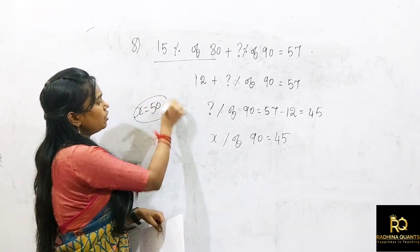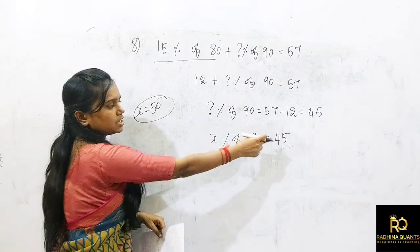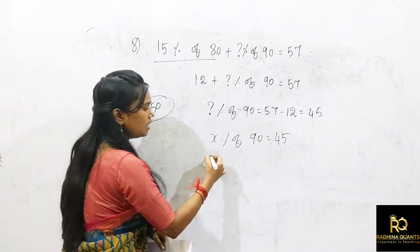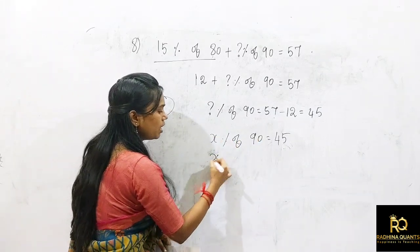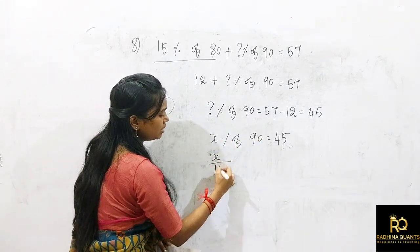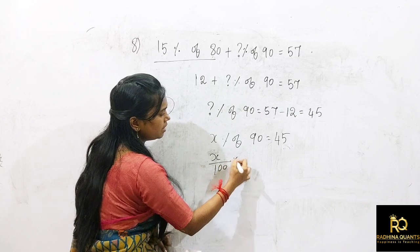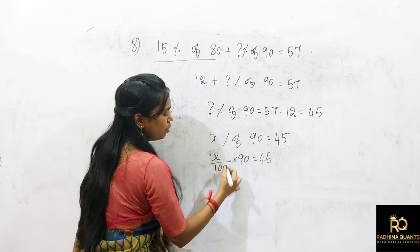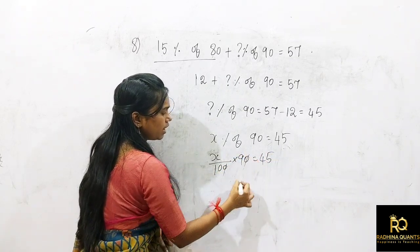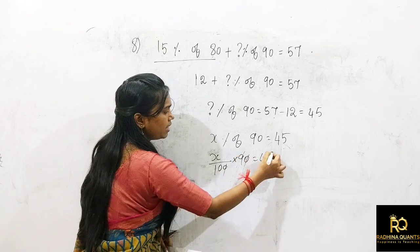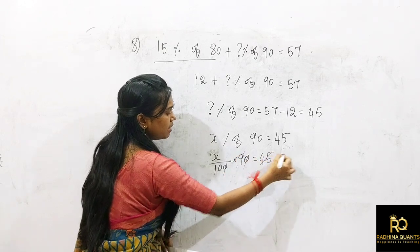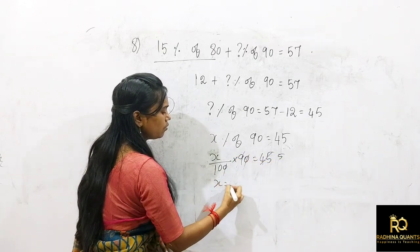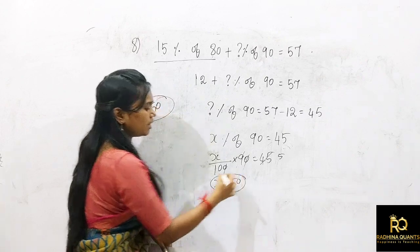We can calculate: x/100 × 90 = 45. Cancel 90 and 45: 90/45 = 2. So x = 5 × 10 = 50. Okay.